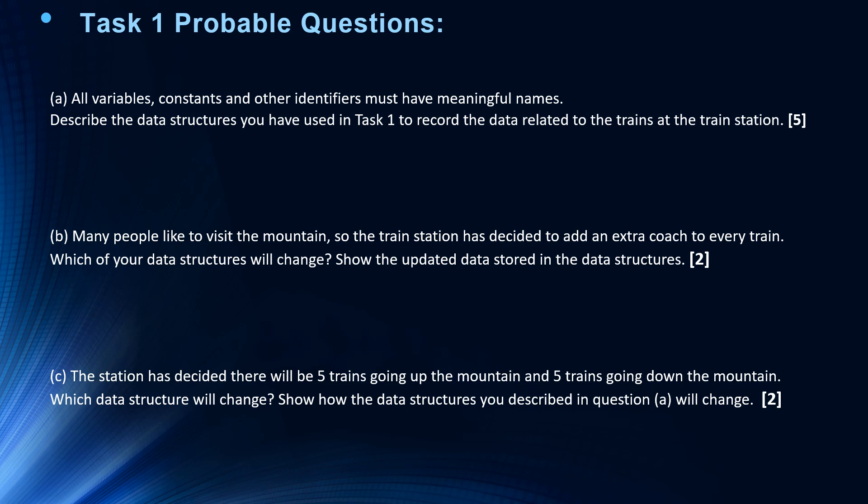Another question like B could be: many people like to visit the mountain, so the train station has decided to add an extra coach to every train. Which of your data structures will change? Show the updated data stored in the data structures. Or for example, C: the station has decided there will be 5 trains going up the mountain and 5 trains going down the mountain every day. Which data structure will change? Show how the data structures you described in question A will change.